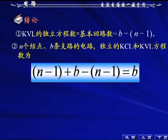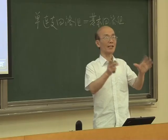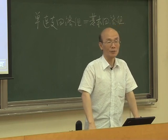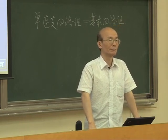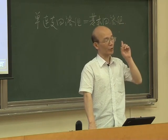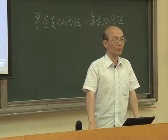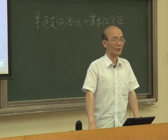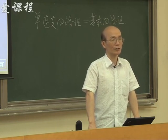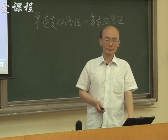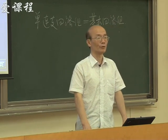对于N个节点B条支路的电路，独立的KCL和KVL方程数等于：(N-1) + (B - N + 1) = B。就是KCL方程和KVL方程加起来的总数等于B，即B个方程。就对一个电路来说，N个节点B条支路的电路，全部独立的KCL方程数加上KVL方程数一共是B个方程。这节课的内容我们就到这里。